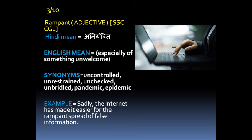The meanings of rampant are 'pandemic' and 'uncontrolled.' Many people already know uncontrolled, so pandemic is a very important synonym of rampant. Pandemic is an important synonym of the word rampant. The antonym of rampant is uncontrolled — okay, so pandemic is the synonym and the antonym side relates to controlled behavior.